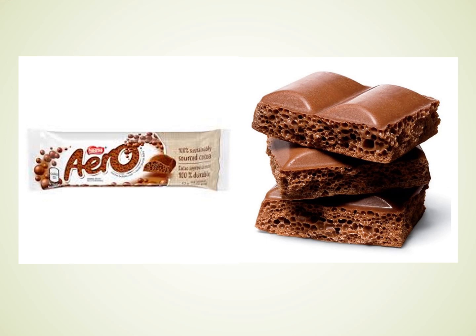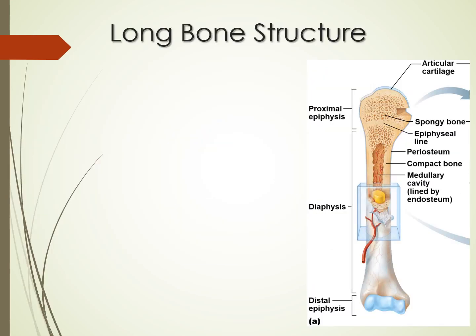A useful analogy: think of a candy bar with a dense outer chocolate layer and spongy air-filled chocolate inside. Of course, in bone it'd be filled with bone marrow rather than air — but that image helps visualize what bone looks like.